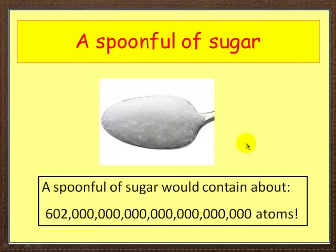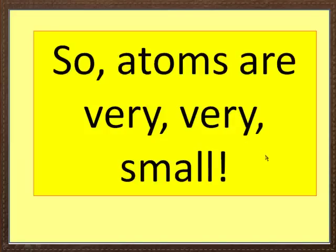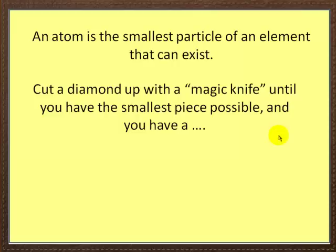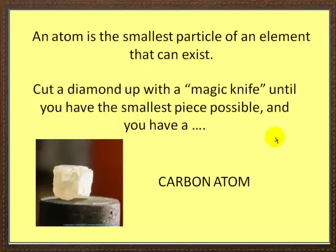What does it tell us? It tells us that atoms are very, very small. Now the atom by definition is the smallest particle of an element that can exist. Suppose you've got a very special knife and you cut up a diamond to the smallest piece. When you get a diamond and keep cutting it and cutting it, you'll be left with a carbon atom. So diamond consists of carbon atoms.